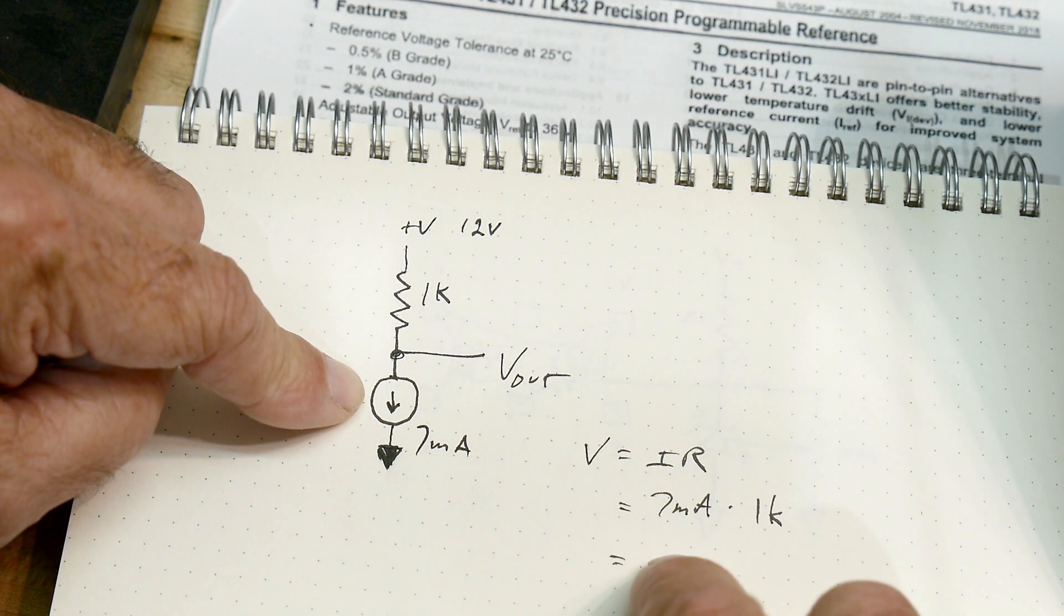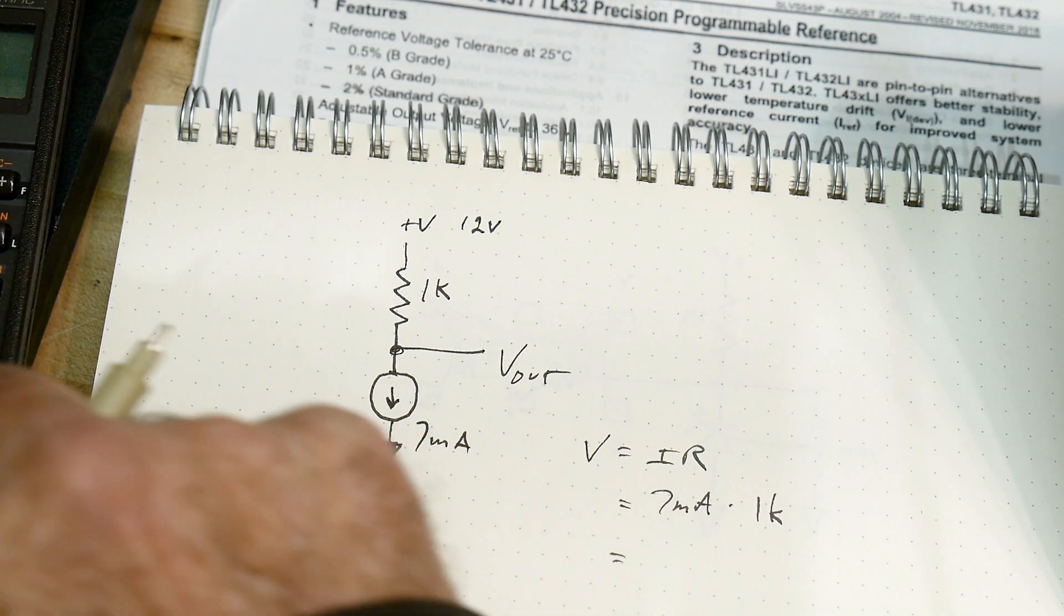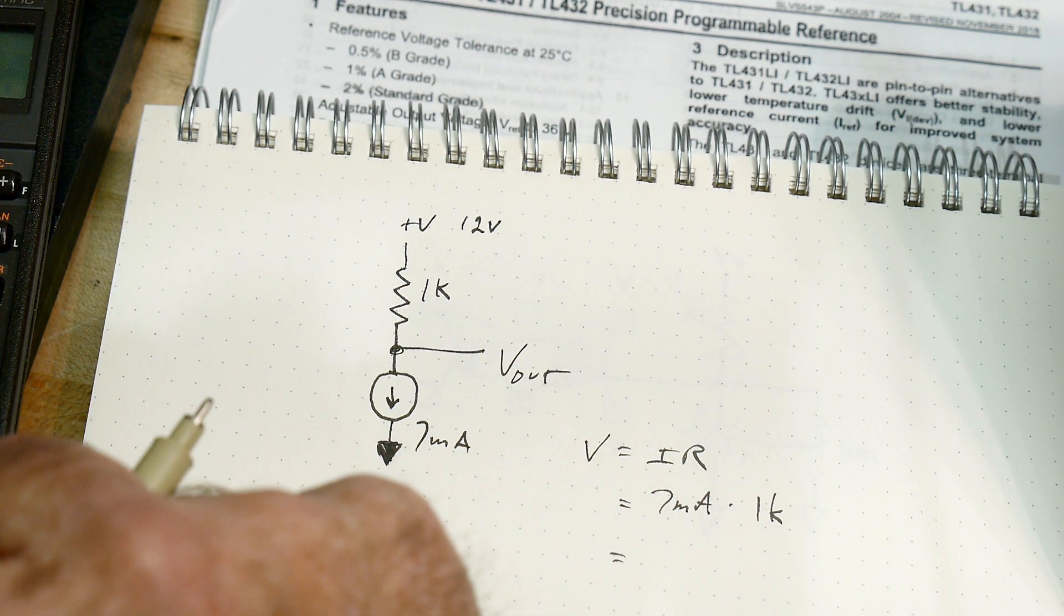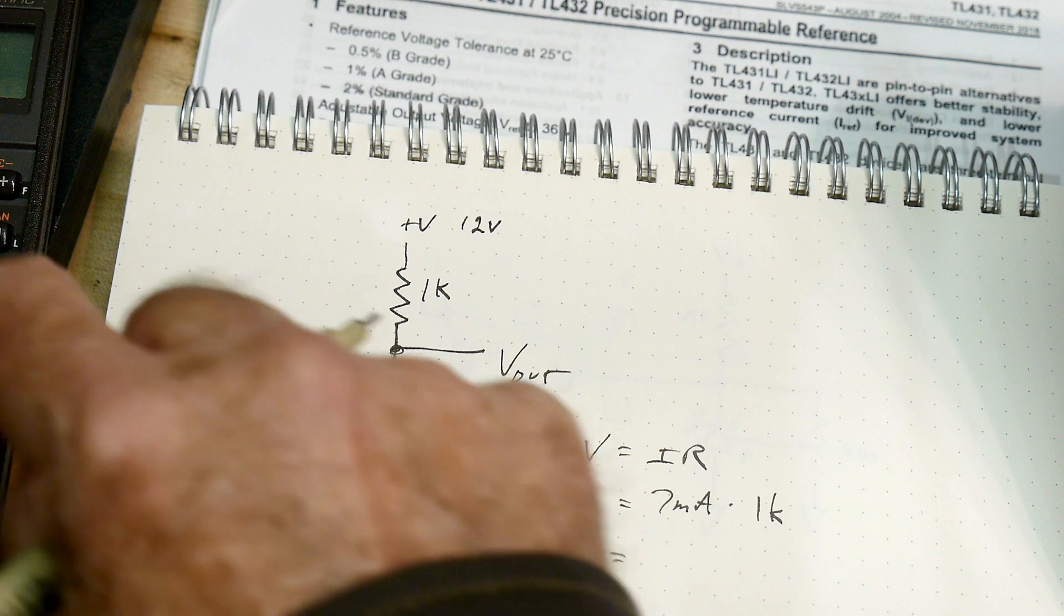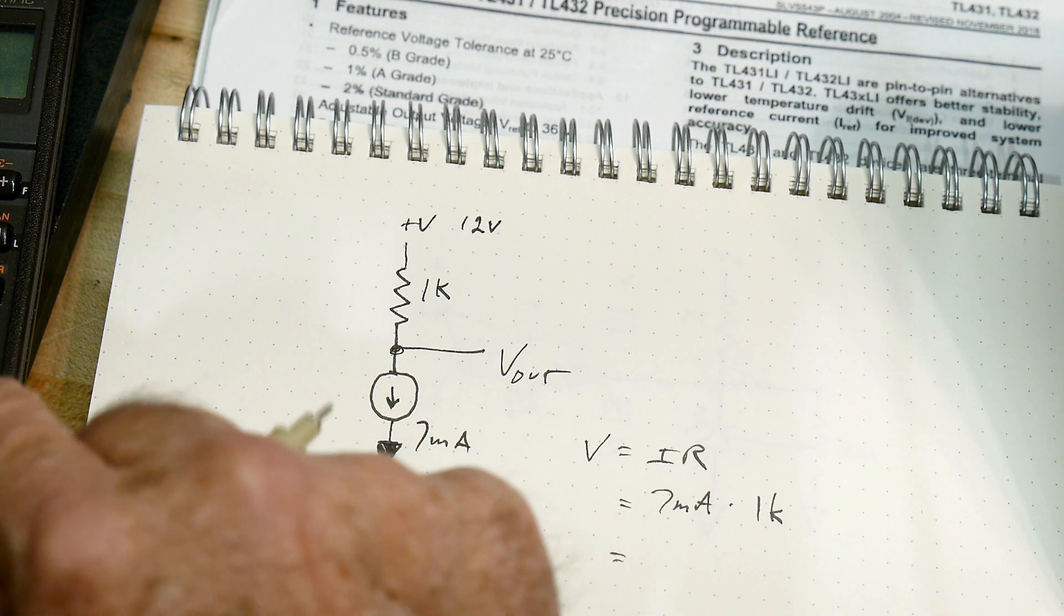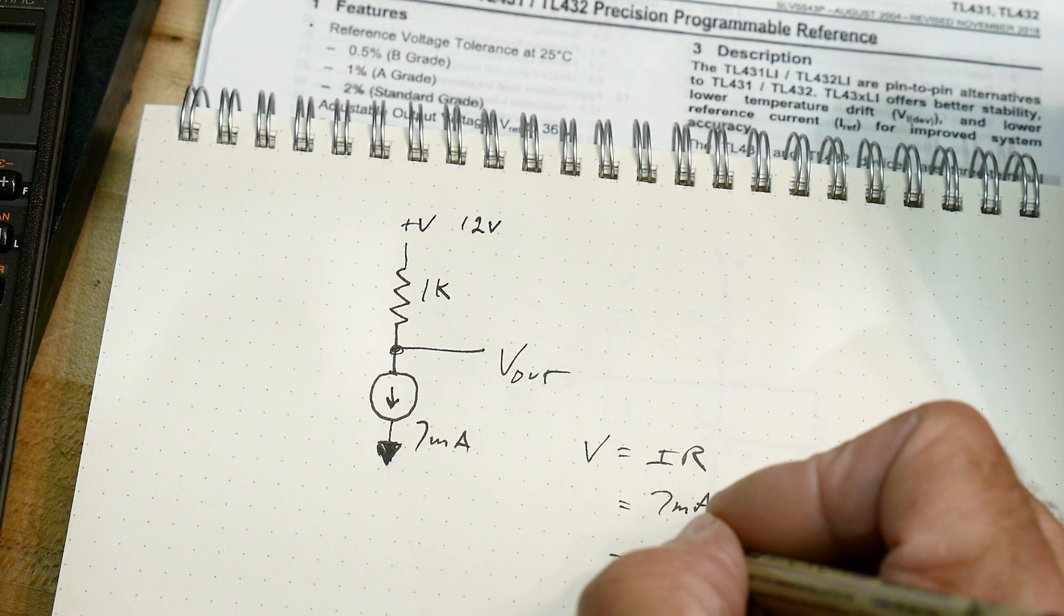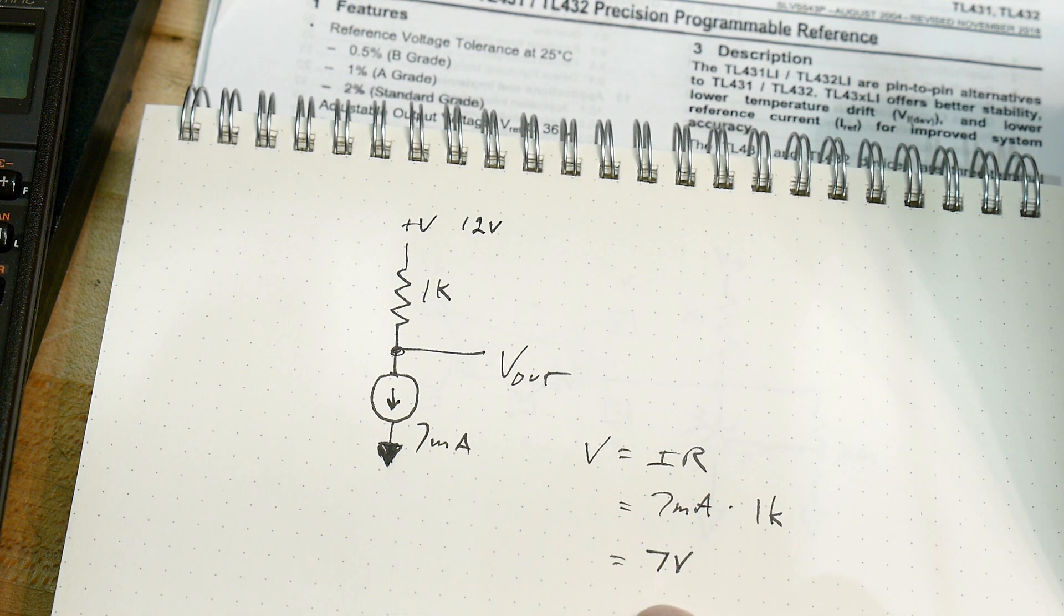Well, it means that we have, get out a calculator if you don't trust yourself, 1,000 times 0.007. We have 7 volts. Okay, 7 volts.